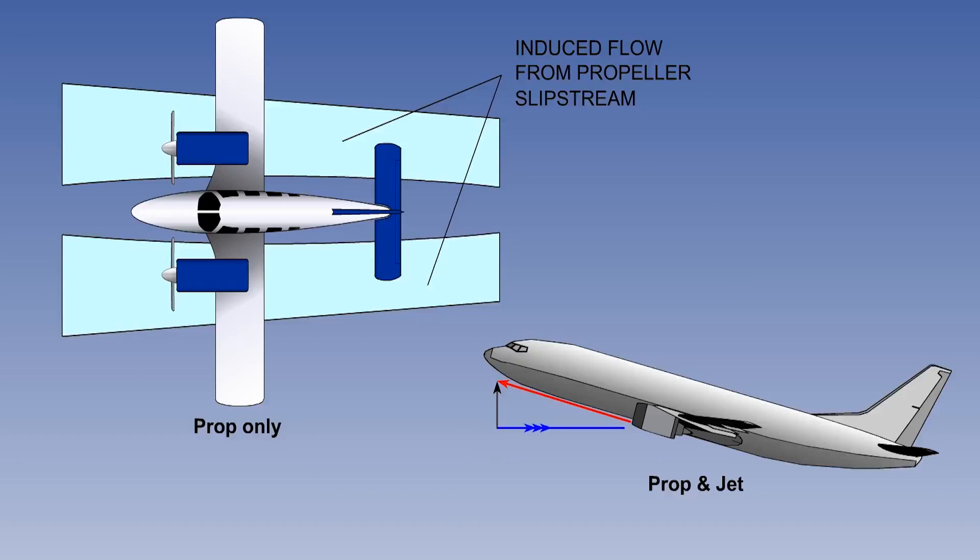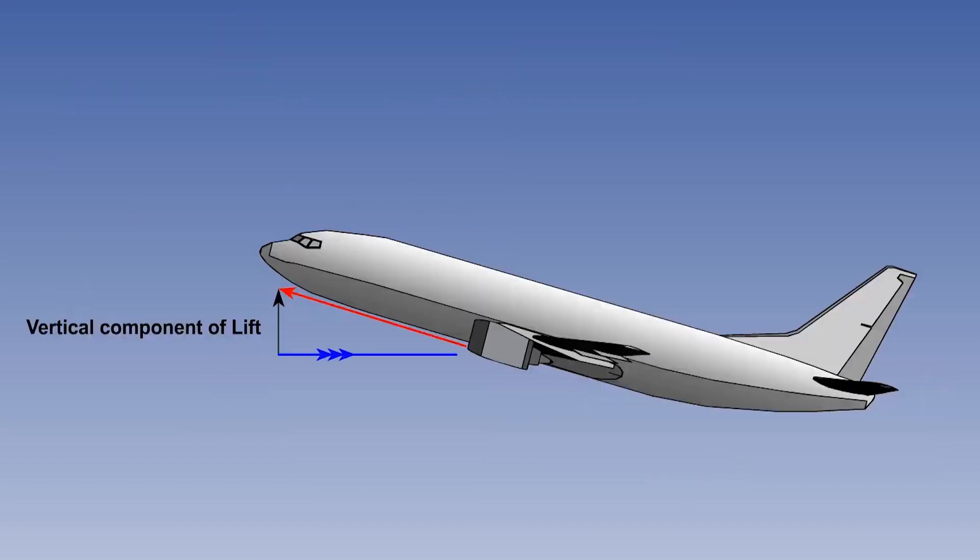Regarding engine thrust, the EASA Regulation 25.103b states that VCL max is to be determined with zero thrust at stall speed, and it is assumed that the aircraft is supported entirely by lift. If thrust is applied close to the stall, the nose-high attitude will produce a vertical component of thrust, which helps to support the weight, and less lift is required.